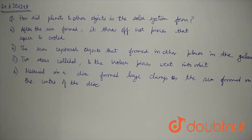The dust cloud collapsed, and then the solar nebula formed. It's a disk — a swirling disk of matter.